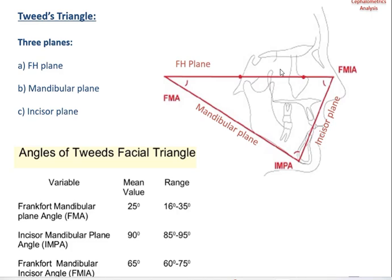For the incisor mandibular plane angle (IMPA), the mean value is 90 degrees with a range of 85 to 95. For FMIA, the mean value is 65 degrees with a range of 60 to 75.